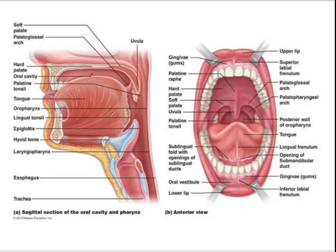Posterior to the hard palate is the soft palate. It lacks bone and its core is primarily composed of skeletal muscle. During swallowing, it rises and closes off the entry of the nasopharynx. The soft palate is anchored to the tongue by the palatoglossus arches and to the wall of the oral pharynx by the palatopharyngeus arches.